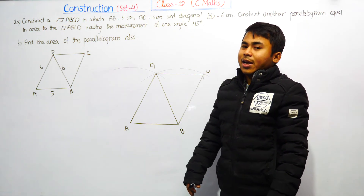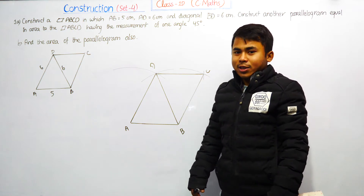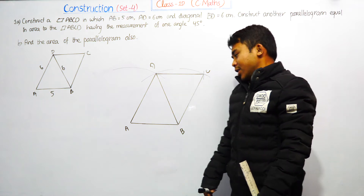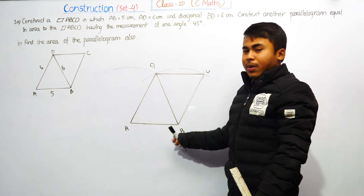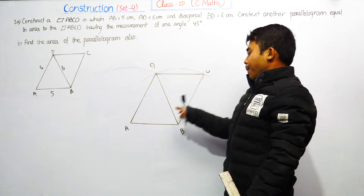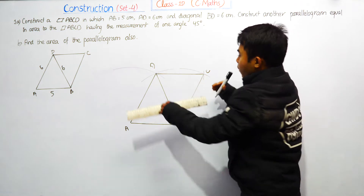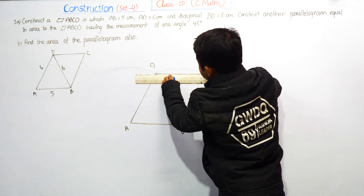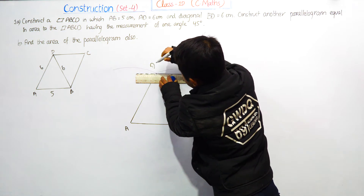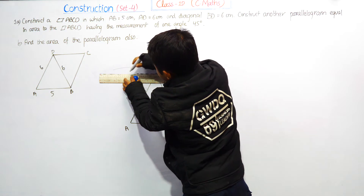The area is the same. Parallelograms standing on the same base and between the same parallel lines are equal in area. The same base is the same, and between the same parallel lines — the same parallel lines are equal.